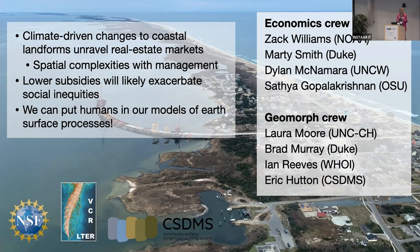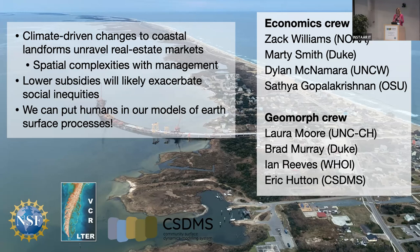My takeaways: climate-driven changes to coastal landforms can unravel real estate markets. There are complexities with spatial variability in management, and lower subsidies likely exacerbate social inequalities. I think this is an interesting demonstration of how we as earth scientists and earth surface process modelers can incorporate humans into our frameworks. This project is 10 years in the making. The economics crew consisted of Zach, Marty, Dylan, and Satya — economists and nonlinear dynamicists — so it was a really interdisciplinary crew, with a lot of help from CSDMS.